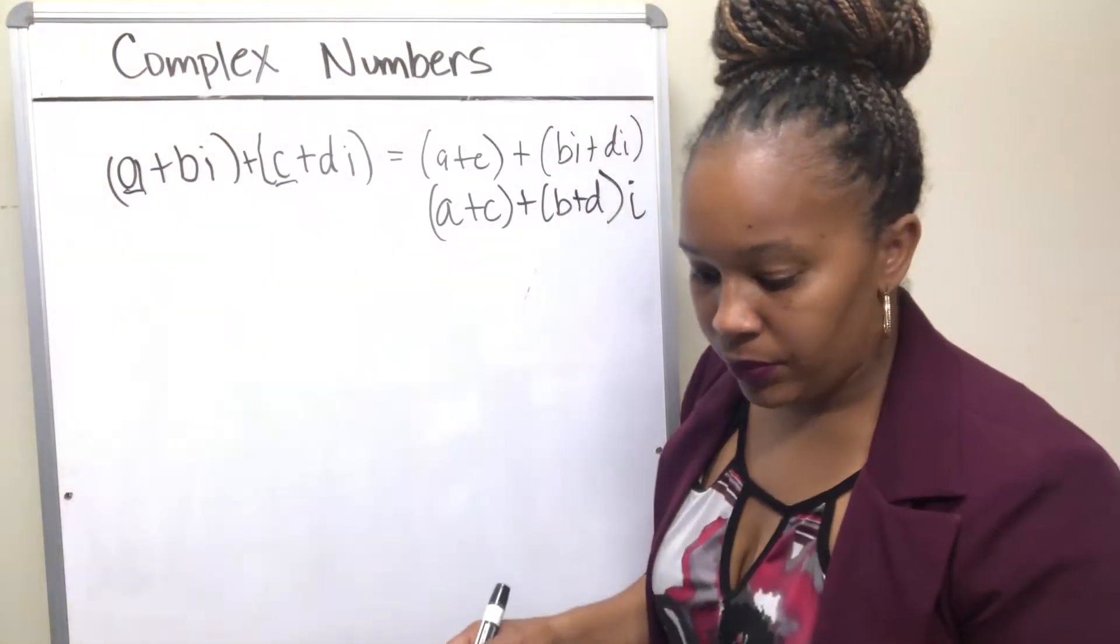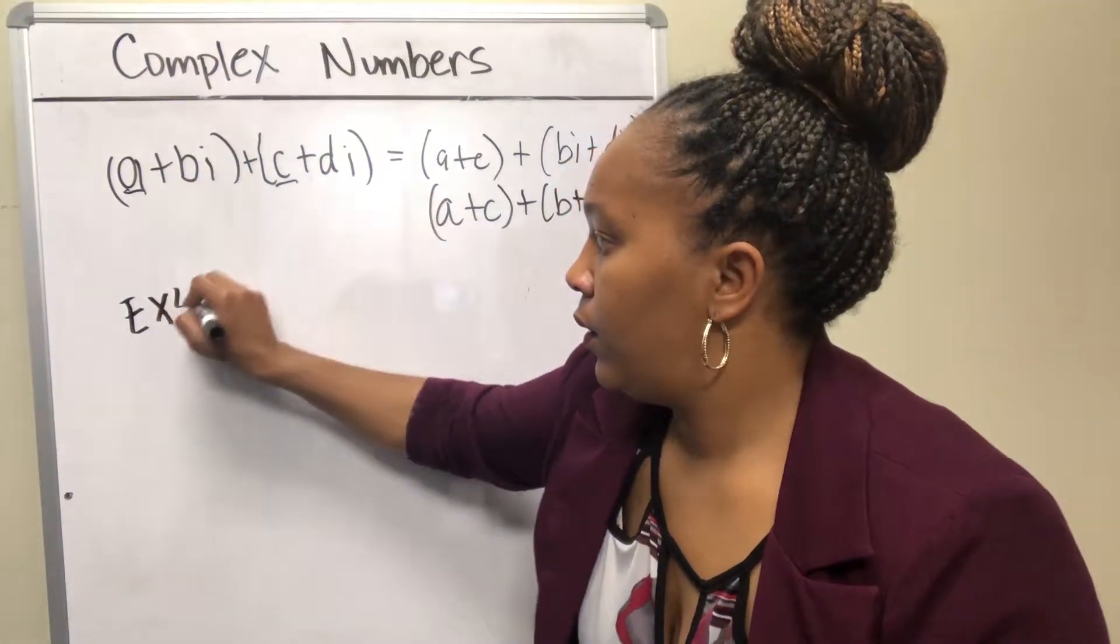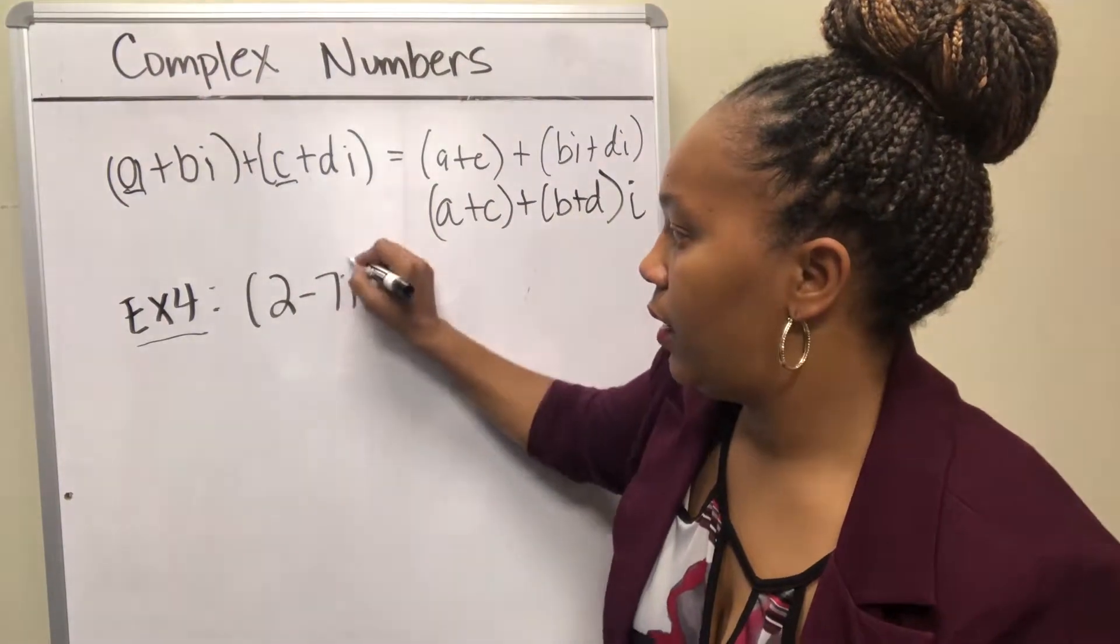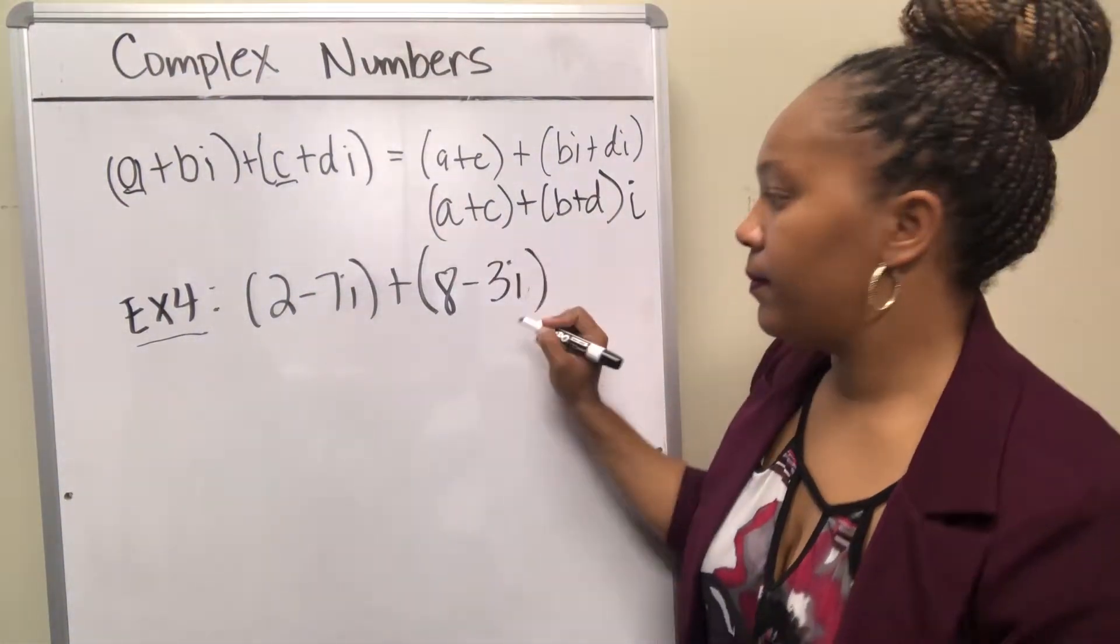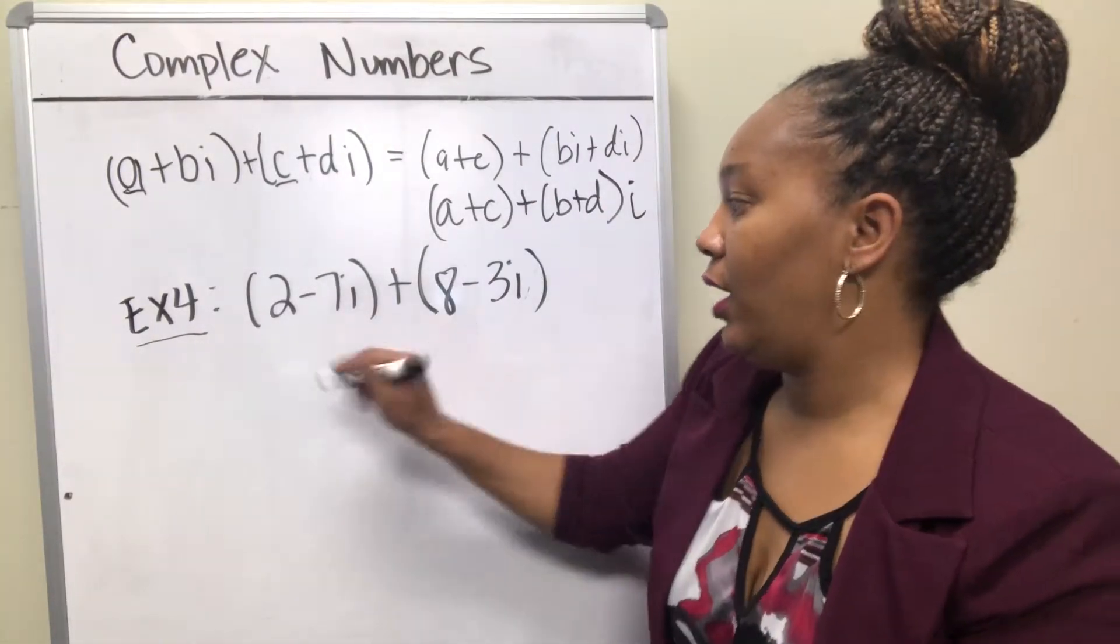So let's do an example. Example four: we're going to add 2 minus 7i plus 8 minus 3i. So again, you want to add the real parts together, so the 2 and the 8.